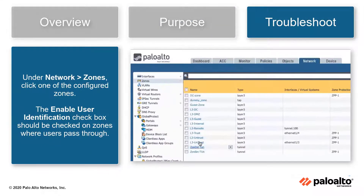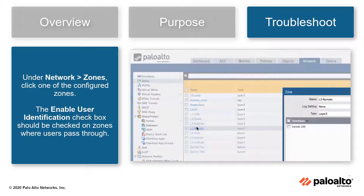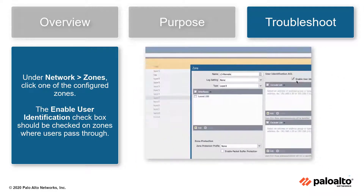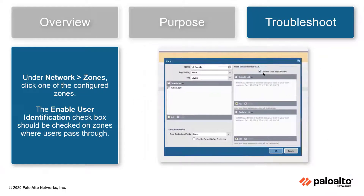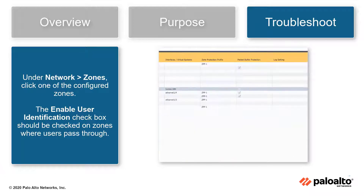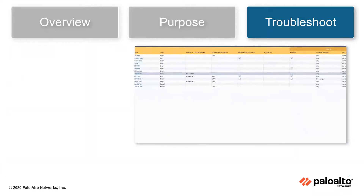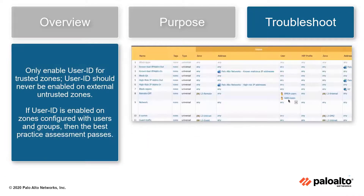Under Network Zones, click on one of the configured zones. The Enabled User Identification checkbox should be checked on zones which users pass through. Only enable User ID for trusted zones — User ID should never be enabled on external, untrusted zones.